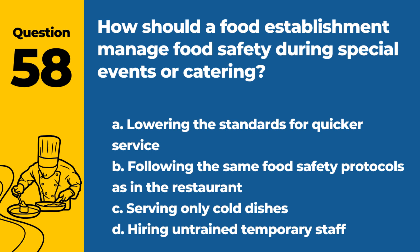Question 58. How should a food establishment manage food safety during special events or catering? A. Lowering the standards for quicker service. B. Following the same food safety protocols as in the restaurant. C. Serving only cold dishes. D. Hiring untrained temporary staff. Answer: B. Following the same food safety protocols as in the restaurant. During special events or catering, a food establishment should manage food safety by following the same protocols as they would in the restaurant.